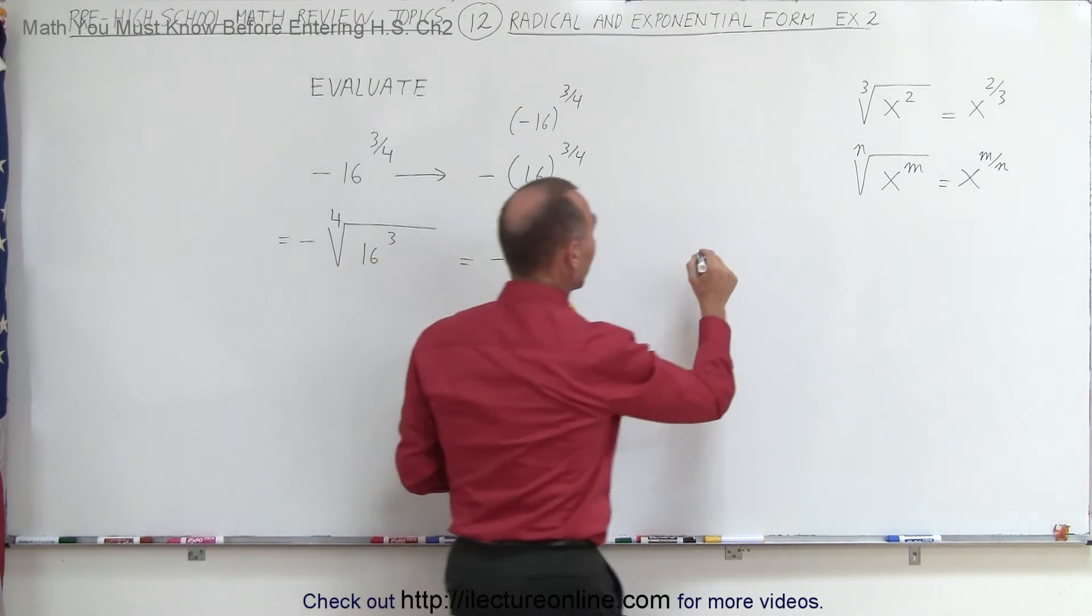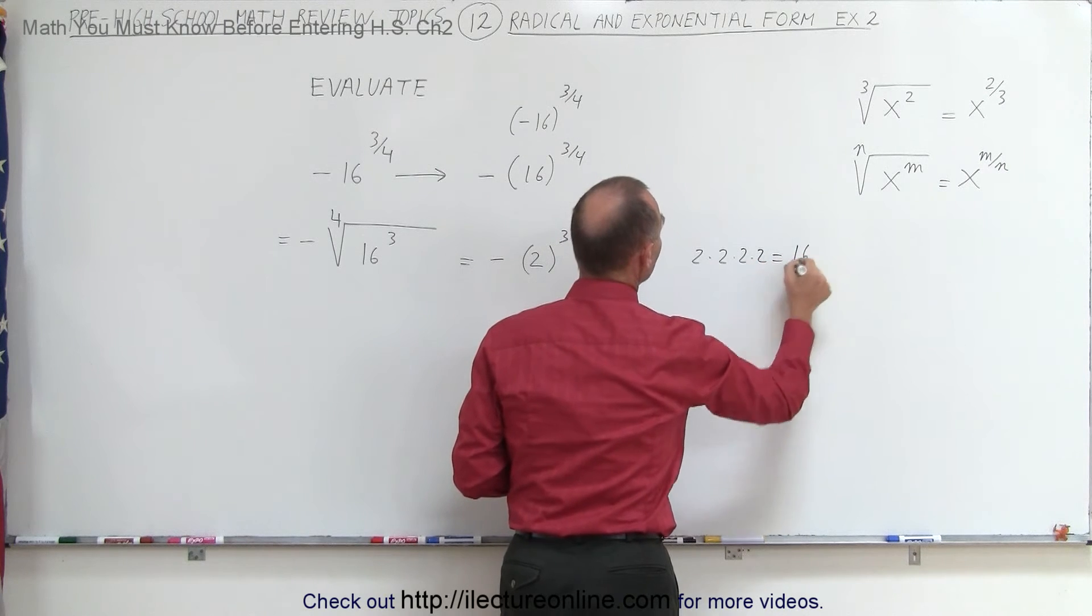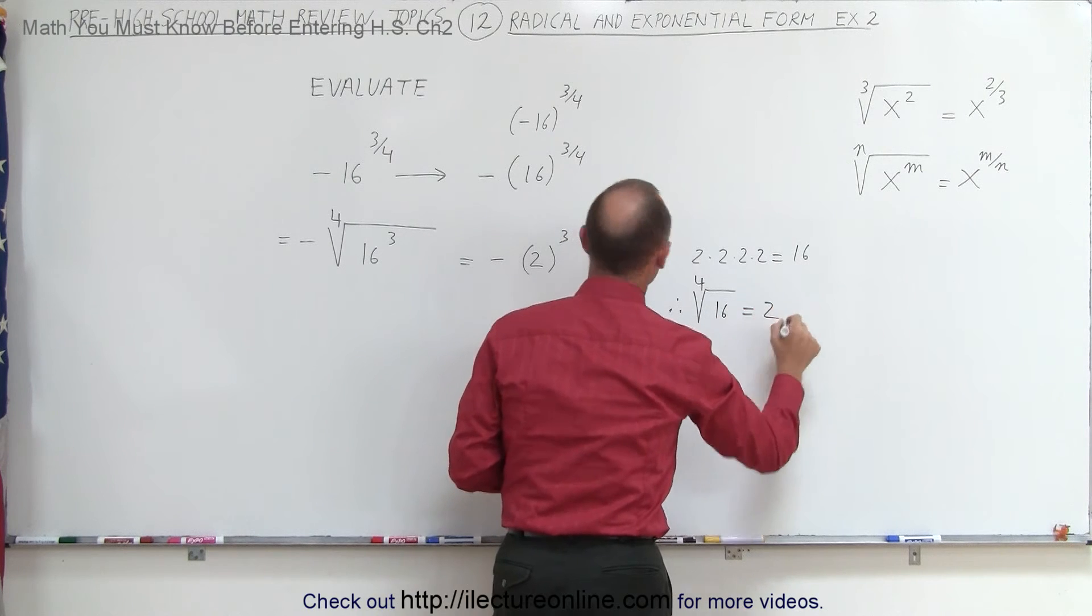The reason why I know that is because 2 times 2 times 2 times 2 equals 16. And therefore, the fourth root of 16 is equal to 2.